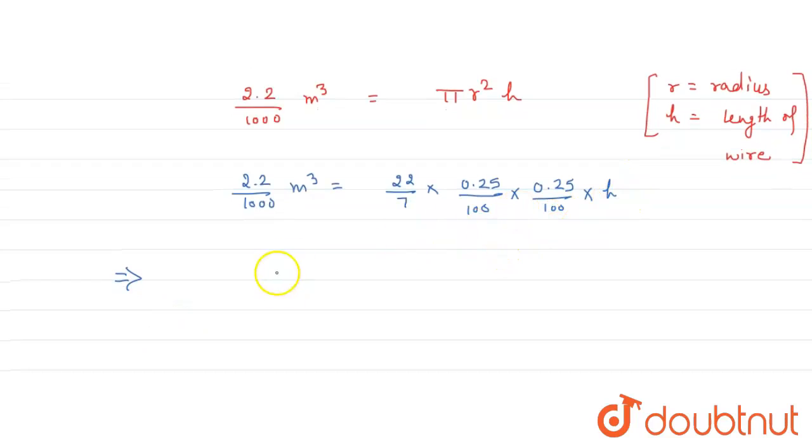Now simplify, cross multiply. So h is equal to 2.2 multiplied by 7 multiplied by 100 multiplied by 100 upon 1000.